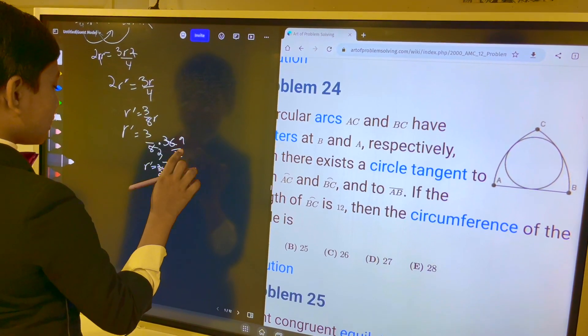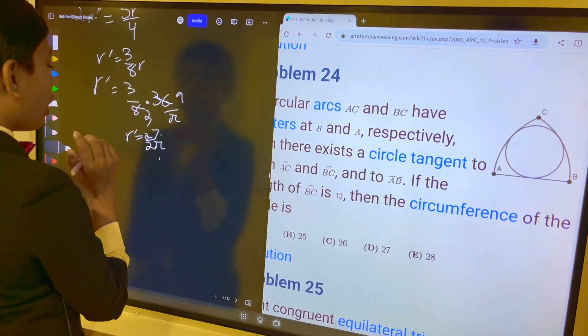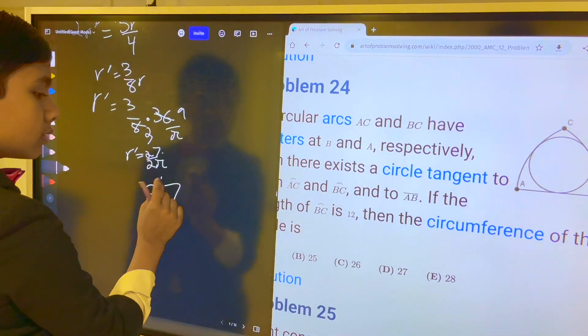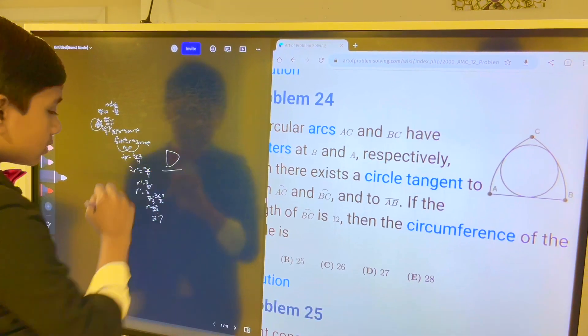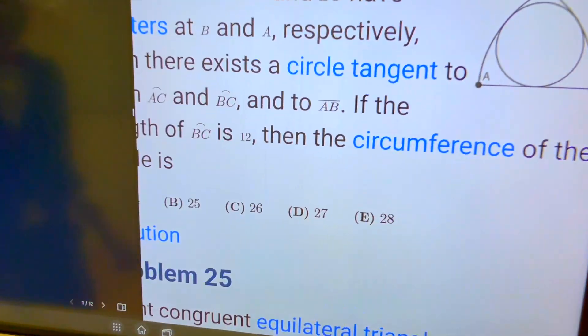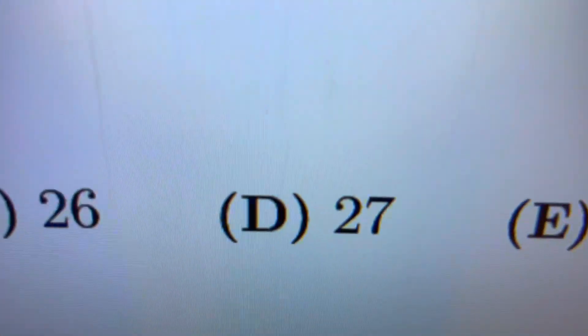So the circumference, 2πR prime, is 27. Thank you everybody for watching. We'll see you in the next one.